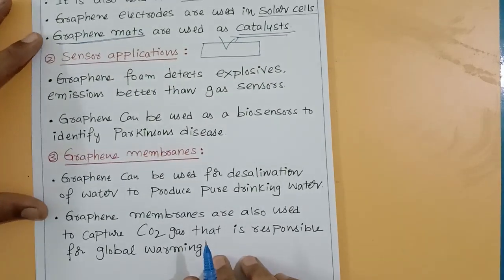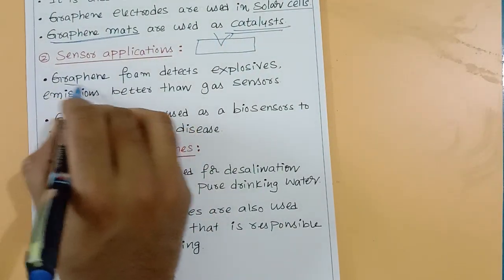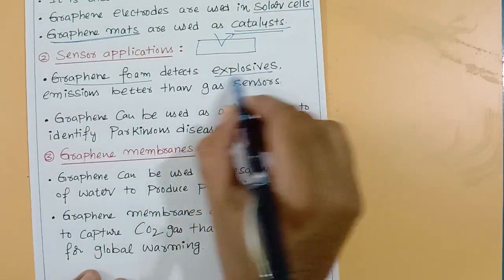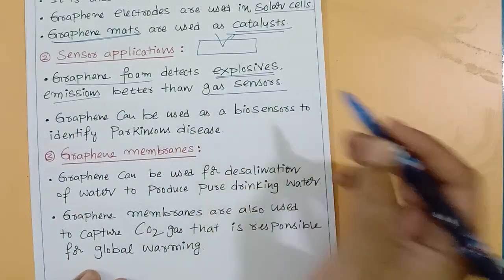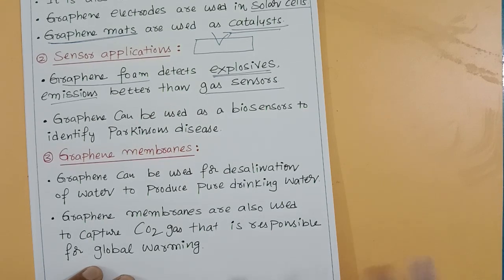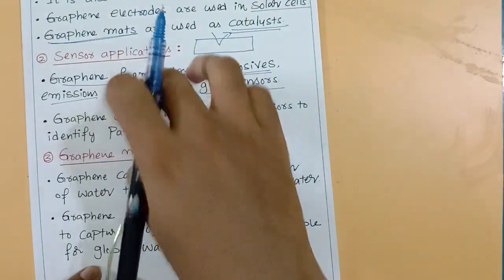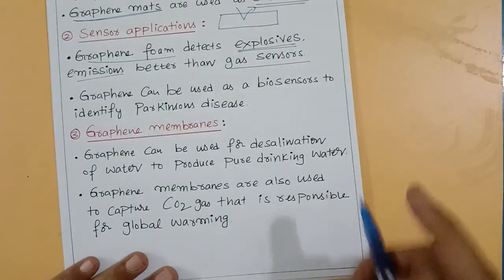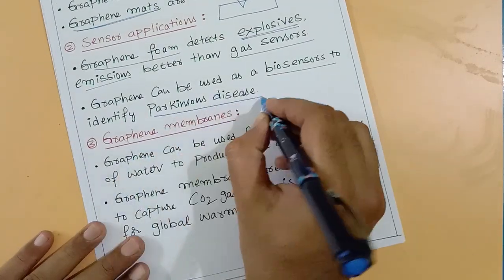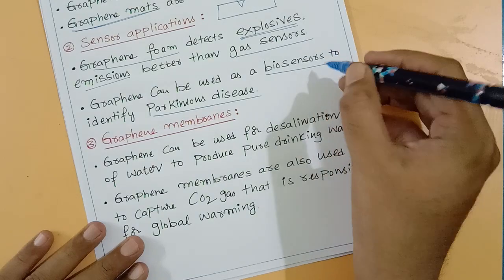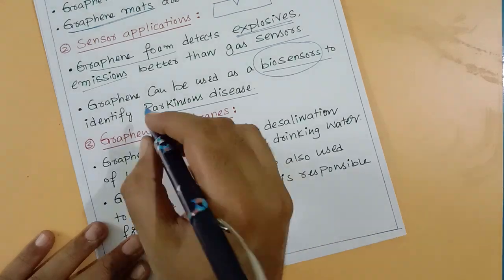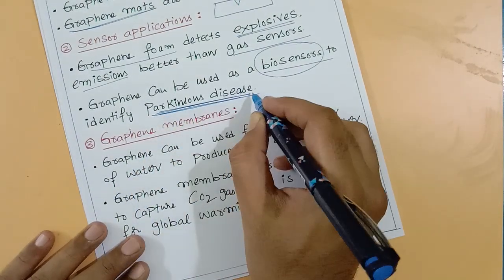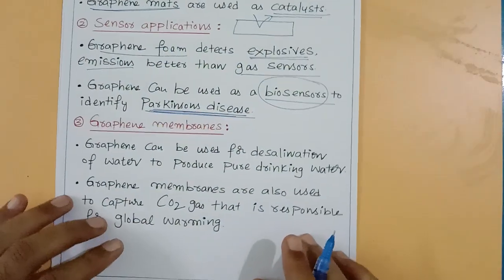Sensor applications: graphene foam is used to detect the smell of gases released by explosives and emissions, performing better than conventional gas sensors. Graphene can also be used as biosensors to identify Parkinson's disease by detecting the chemical compounds released by those affected.